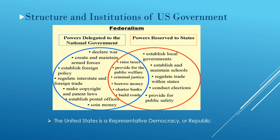Federalism is the idea of sharing power between the national government and the state government. Also remember that the United States is a representative democracy, or a republic. What do we mean by representative democracy? We mean that we elect — we vote for people — we vote for who we want to be president, we vote for our congressmen, we vote for senators, we vote for governors, and we vote for people who represent us as leaders of our city, our state, and our nation.